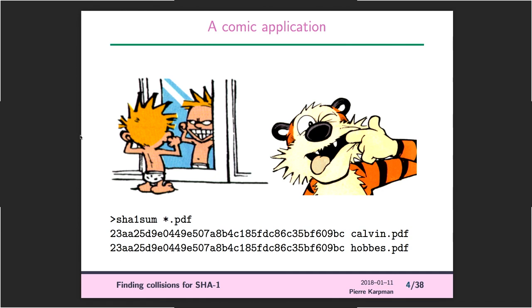So what you can do with this: you can have two PDFs, one showing Kelvin, the other showing hubs, and they actually hash to the same value. I could have cheated on this slide, but the PDFs do exist. That's one of the things you can do with any kind of pictures you like.